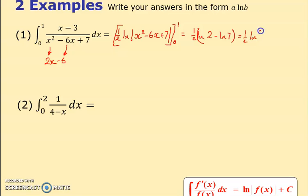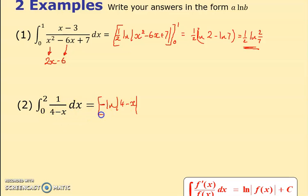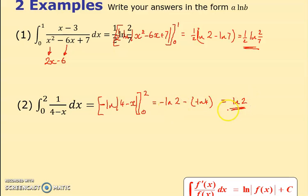That gives me half of log 8 over 7, using the rule for combining two logarithms. For the next one, integrating 1 over 4 minus x gives log of 4 minus x between 2 and 0, but the minus x on the bottom puts a minus at the front. The answer becomes minus log 2 minus minus log 4, which is log 4 minus log 2, giving log 2.